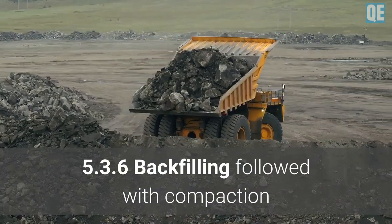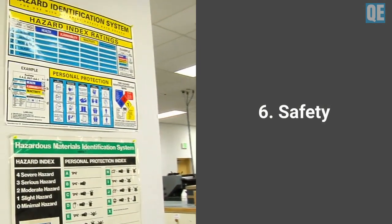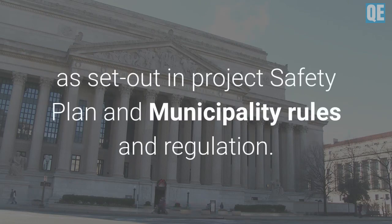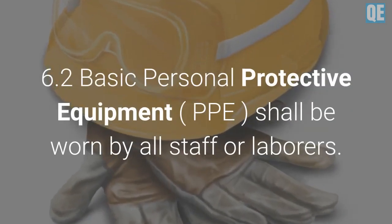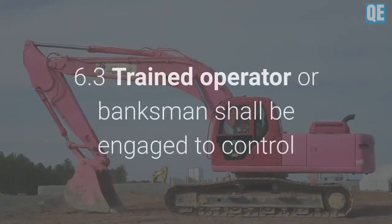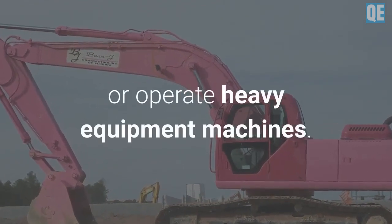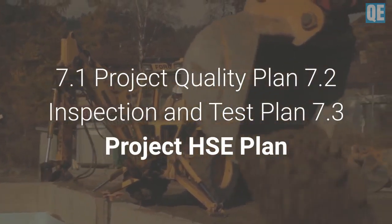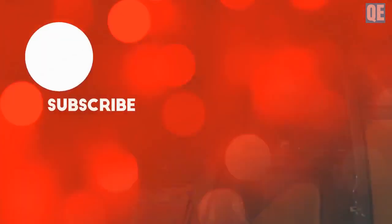5.3.5 In-situ dry density compaction tests shall be performed at the rate indicated in the specification. 5.3.6 Backfilling followed by compaction shall continue until the final level is achieved. 6. Safety. 6.1 All works shall comply with safety procedures or instructions as set out in the project safety plan and municipality rules and regulations. 6.2 Basic personal protective equipment (PPE) shall be worn by all staff or laborers. 6.3 Trained operators or banksmen shall be engaged to control or operate heavy equipment. 7. Quality Assurance: 7.1 Project Quality Plan, 7.2 Inspection and Test Plan, 7.3 Project HSE Plan.